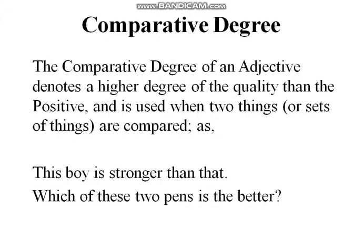Look at the example: 'This boy is stronger than that' — here we are comparing two boys, showing one is stronger than the other. The word 'stronger' shows there is a comparison between two things. Usually the word 'than' is also used in comparative degree. Another example: 'Which of these two pens is the better?' — 'better' is comparative degree telling us which of the two pens is better.